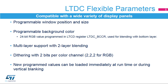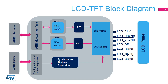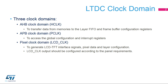New programmed values can be loaded immediately at runtime or during vertical blanking. This is the LCD TFT controller block diagram. The LTDC features three clock domains: the AHB clock domain or HCLK, to transfer data from memories to the layer FIFO and framebuffer configuration registers; the APB clock domain or PCLK, to access the global configuration and interrupt registers; and the pixel clock domain or LCD CLK, to generate LCD TFT interface signals, pixel data, and layer configuration.